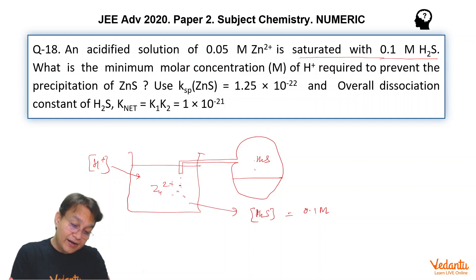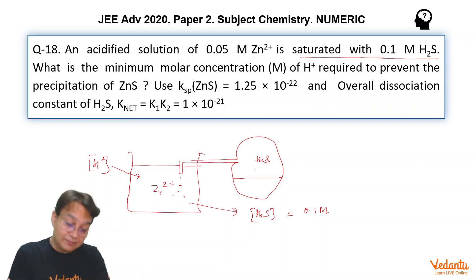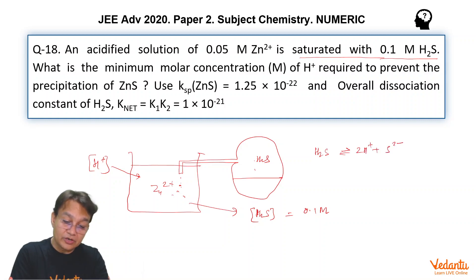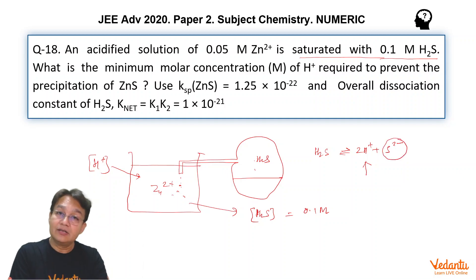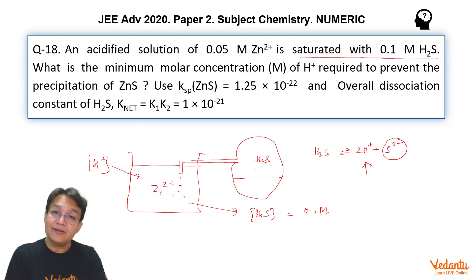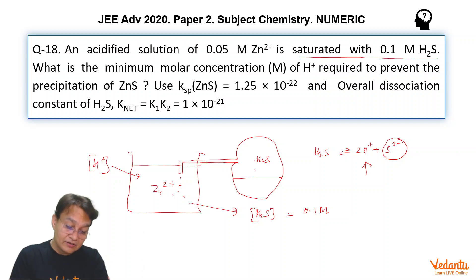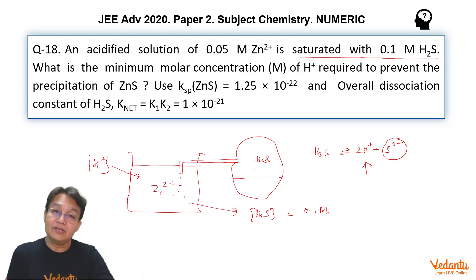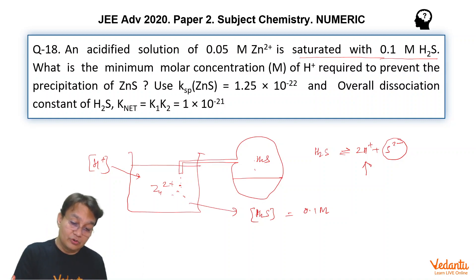So what we have to do is find the H⁺ ion concentration required so that Zn²⁺ is not precipitated. We add H⁺ ion so that the ionization of H₂S — represented as H₂S ⇌ 2H⁺ + S²⁻ — shifts in the backward direction, decreasing S²⁻ concentration. If S²⁻ concentration is very low in the presence of H⁺, then Zn²⁺ cannot be precipitated, meaning S²⁻ will not react with Zn²⁺ to form zinc sulfide.